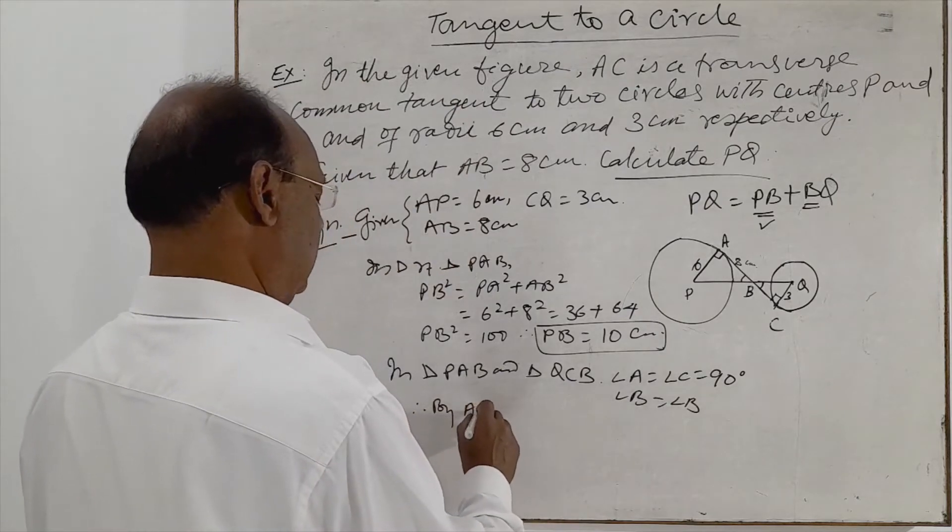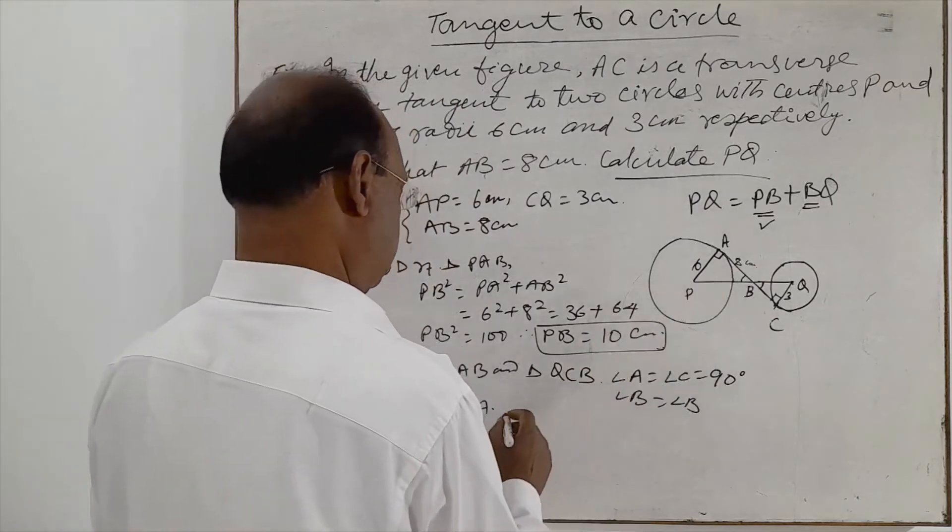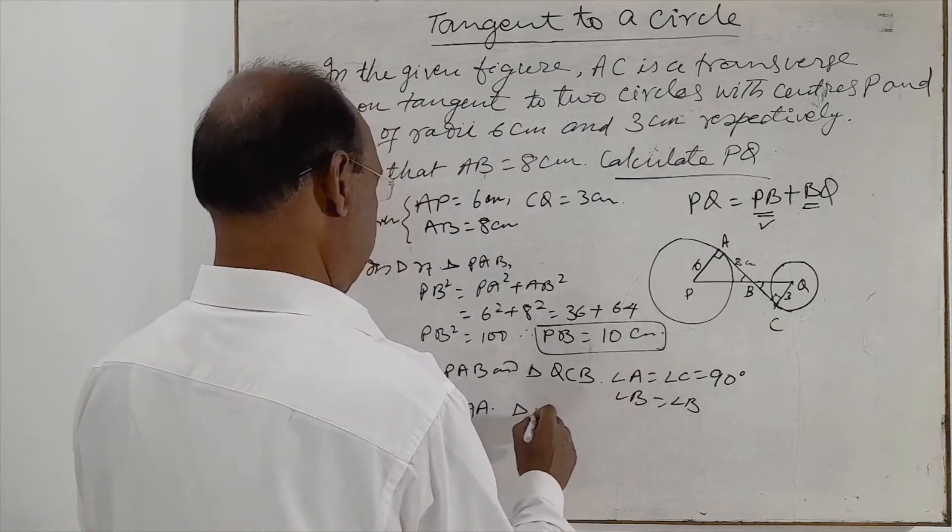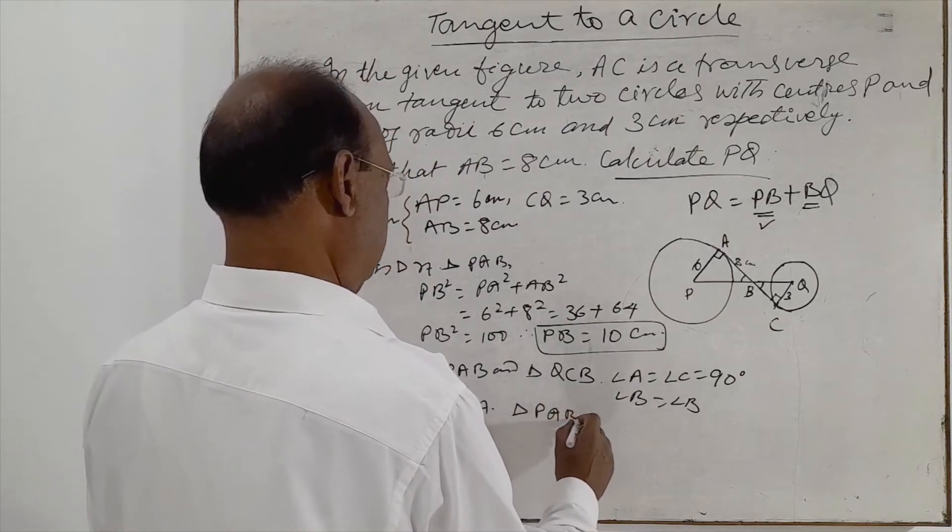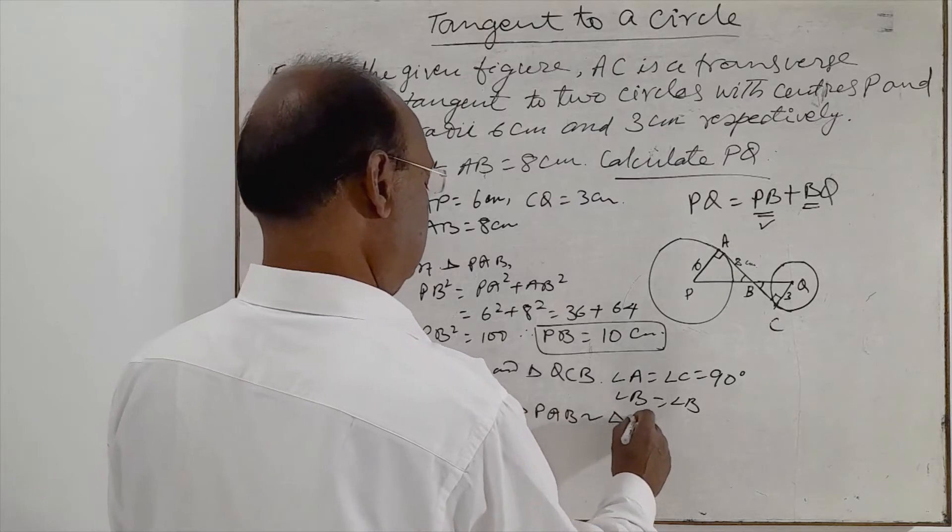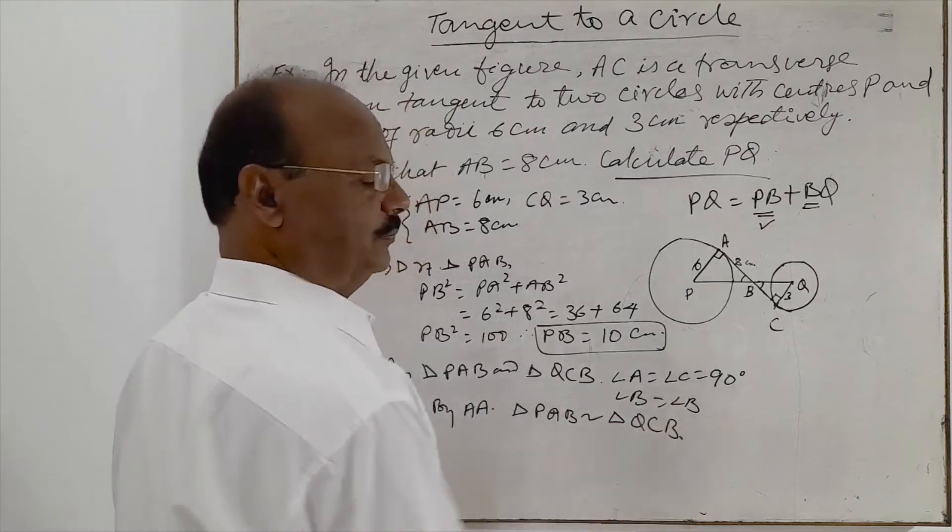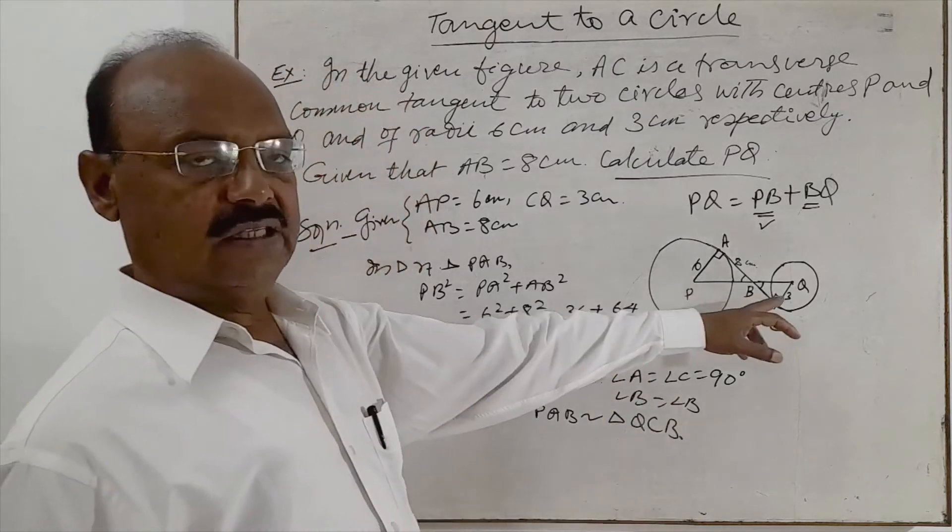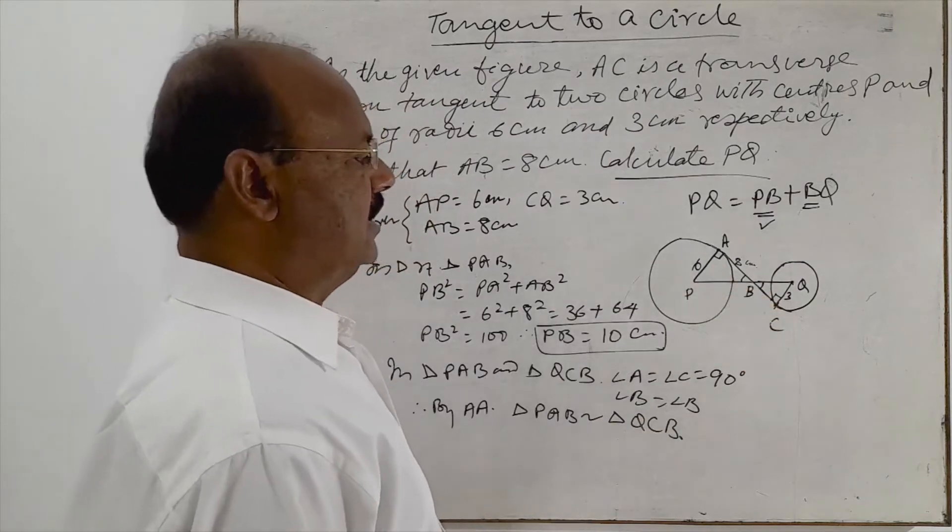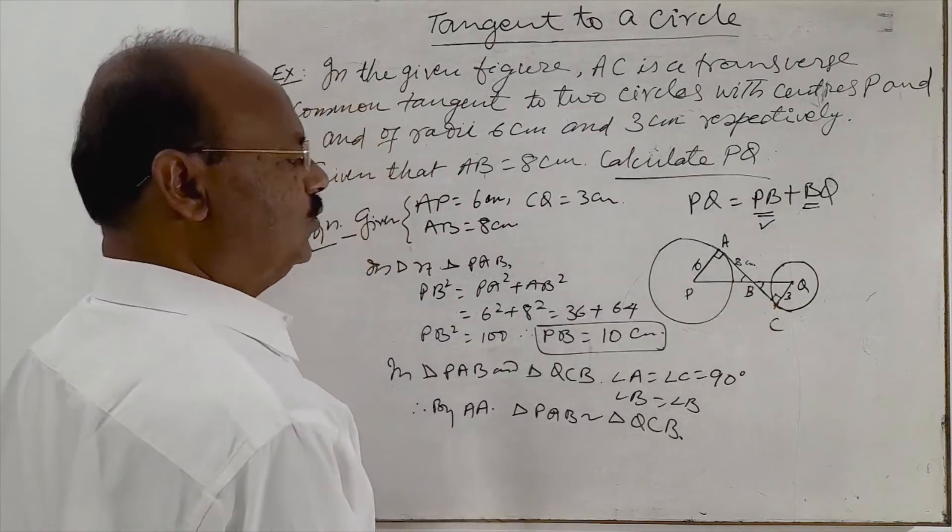Therefore, by angle angle, these two triangles are similar triangles. So therefore, triangle PAB is similar to triangle QCB. And in similar triangles, we know that ratio of corresponding sides will be equal.